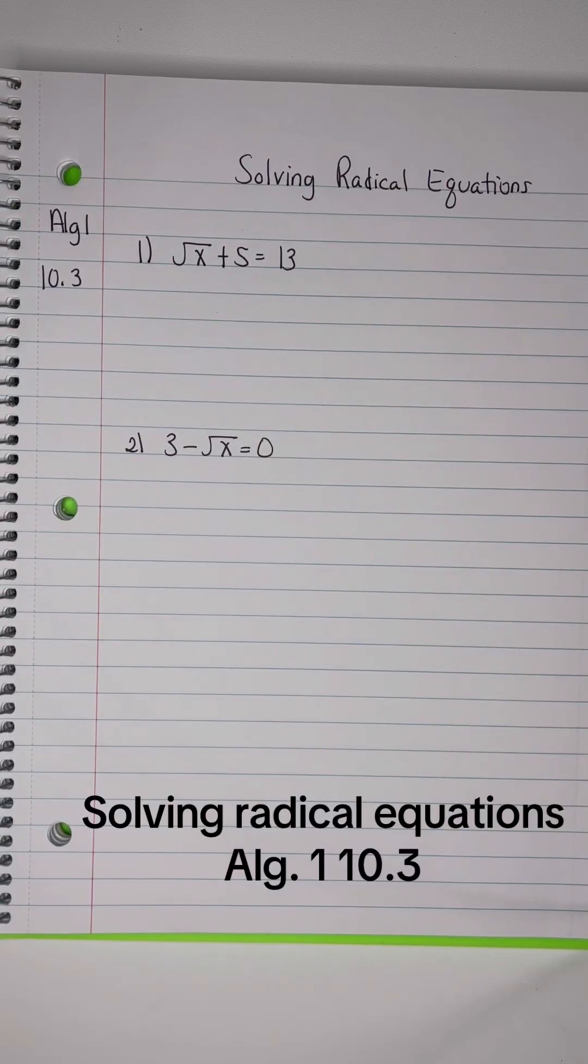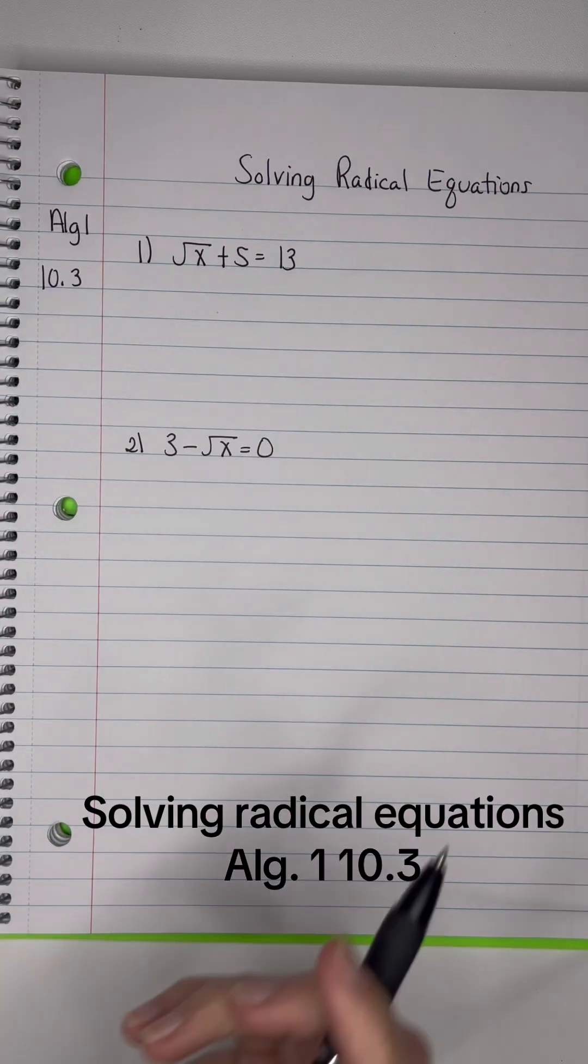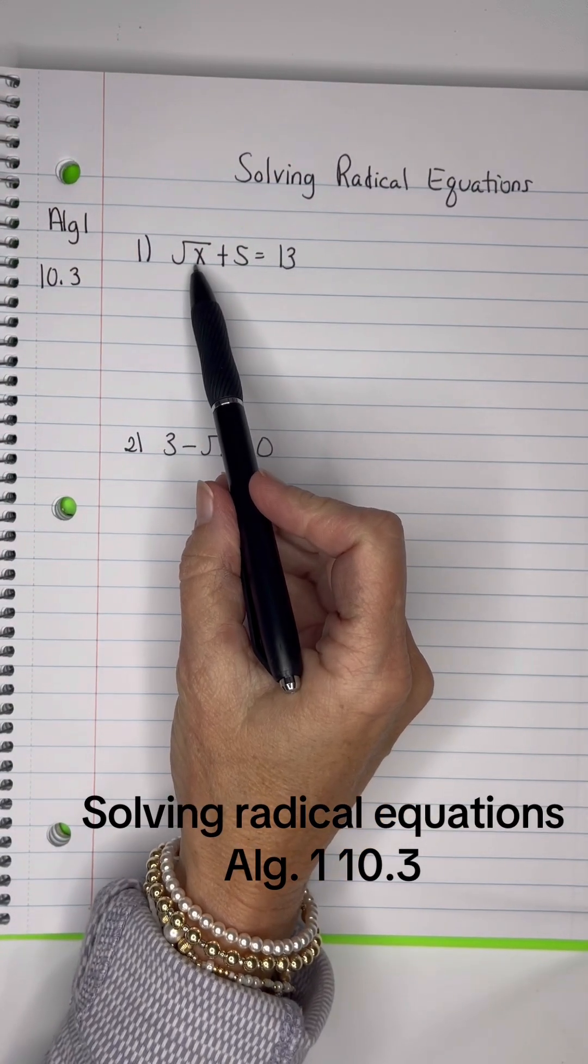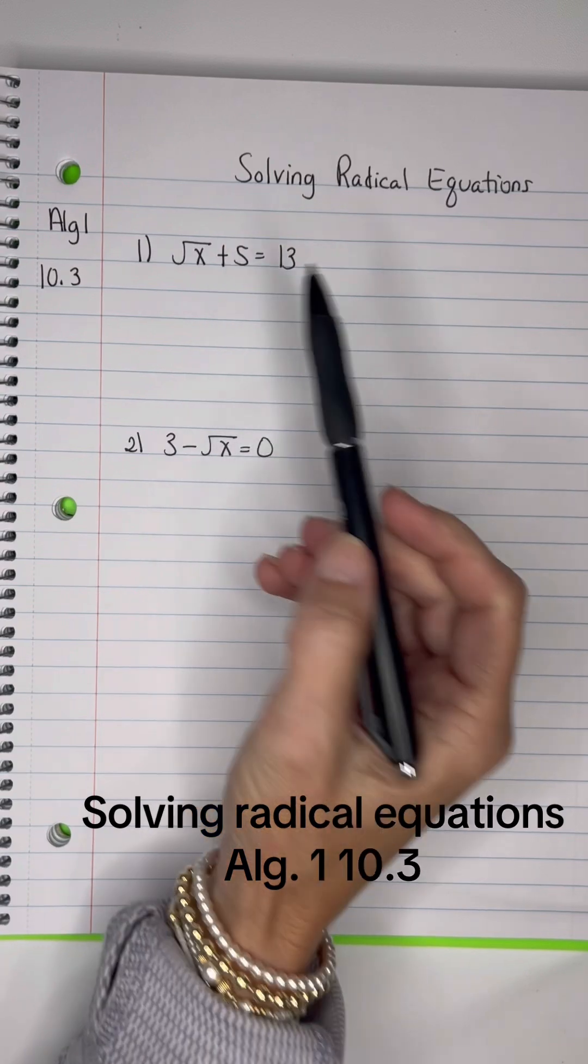Let's solve some radical equations. I don't think we've ever done that in any of the classes. All right, so my job is to isolate this X, get it all by itself, and right now I've got a plus 5 with it.